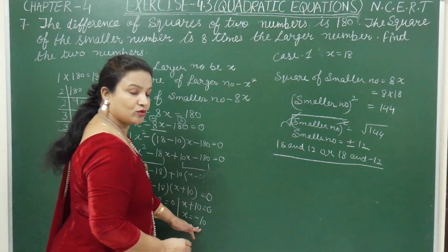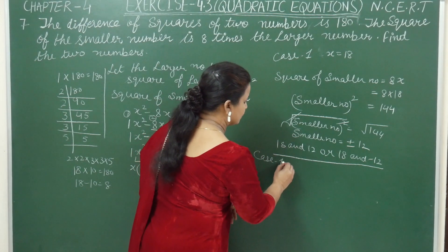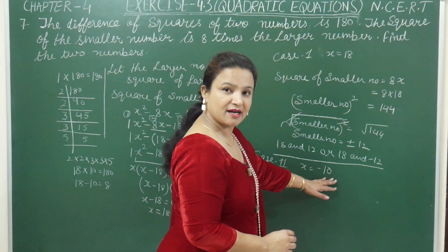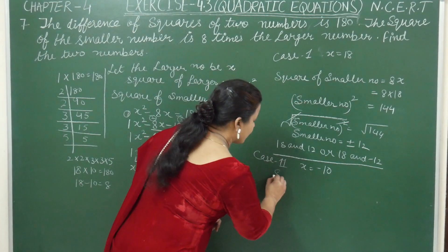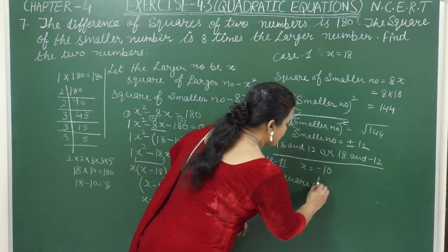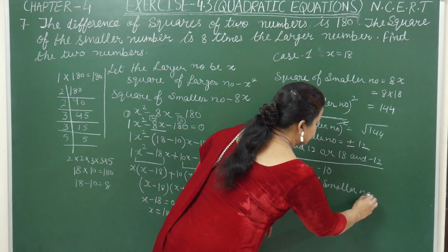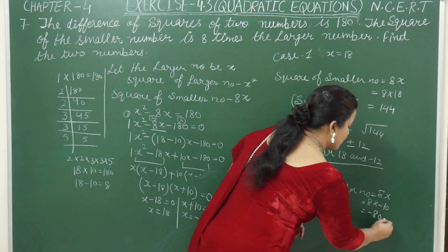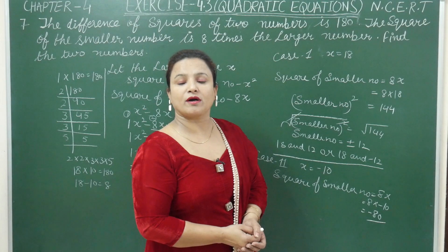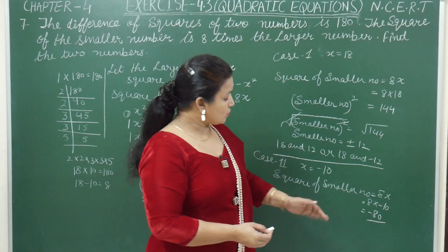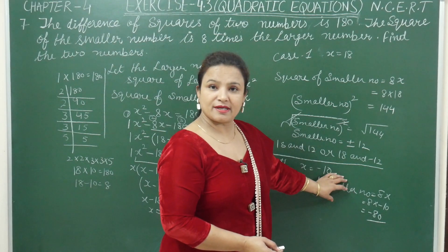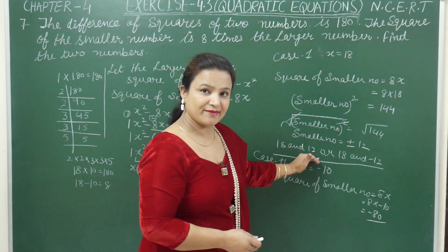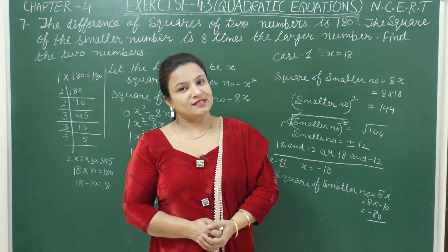Case 2: x = −10. If −10 is the larger number, then the square of the smaller number equals 8 × (−10) = −80. Since a square can never be negative, this case is rejected. Therefore the required numbers are 18 and 12, or 18 and −12. This is the required answer. Thank you so much.